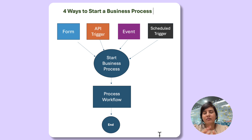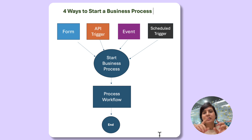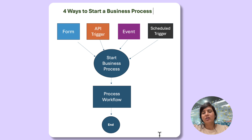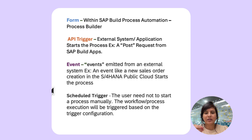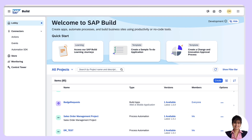Fourth is the schedule trigger. In cases where no manual intervention is required, the schedule trigger can be used. It can be configured with a date and time in order to schedule the start of the process. Here is a short summary of all the ways I have explained so far. Let's jump right into the system and see how the various forms of triggers can be created, configured, and tested.